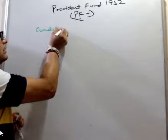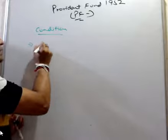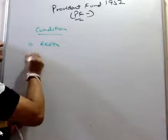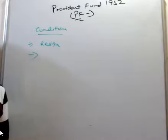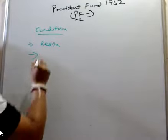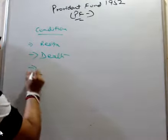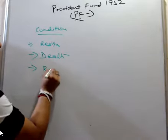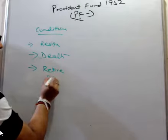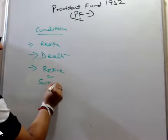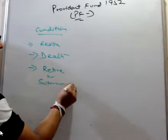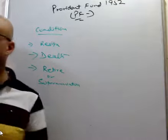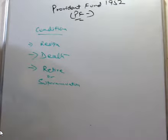There are three conditions in which we give PF. Condition one: if the candidate resigns or death or retire. Retire also called superannuation.